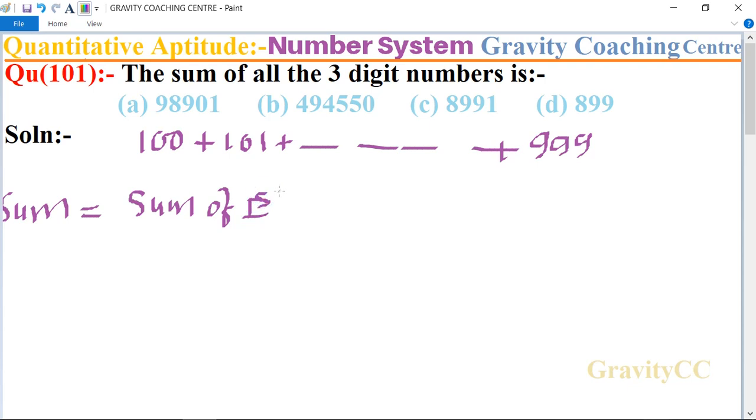first 999 natural numbers minus sum of first 99 natural numbers.